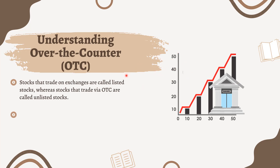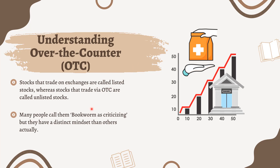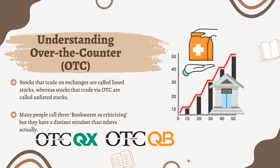Many other types of securities also trade OTC. Stocks that trade on exchanges are called listed stocks, whereas stocks that trade via OTC are called unlisted stocks. Trade transactions can take place through OTC Markets Group's electronic matching platforms such as the OTC QX, OTC QB, and the Pink Open Market, also known as OTC Pink or Pink Sheets.